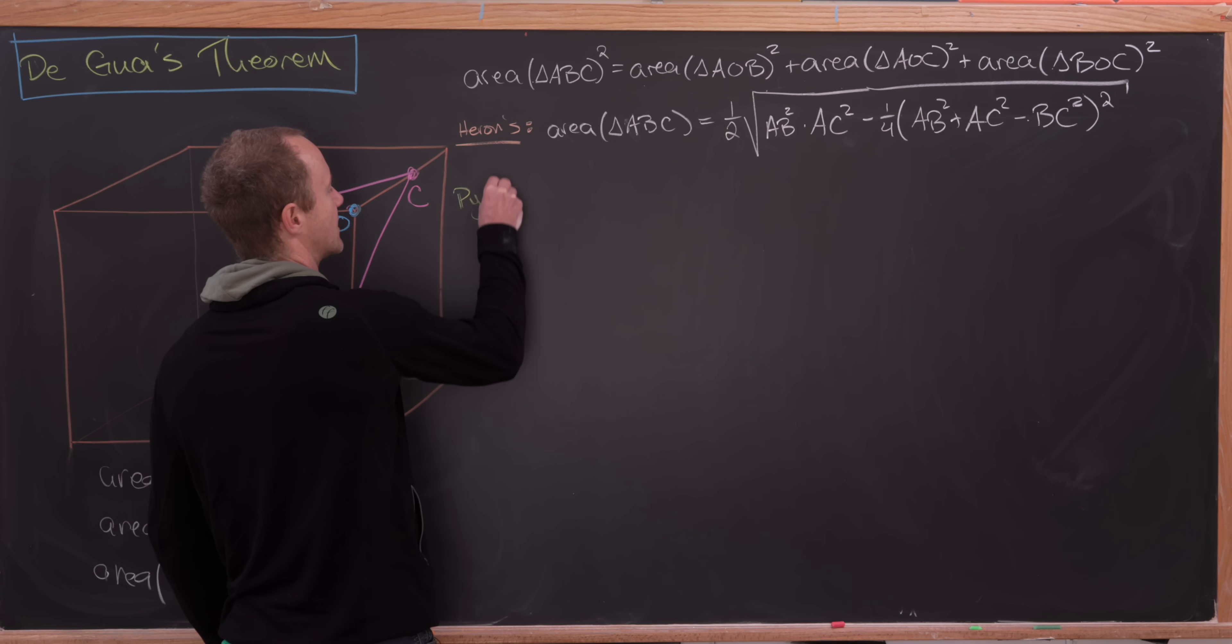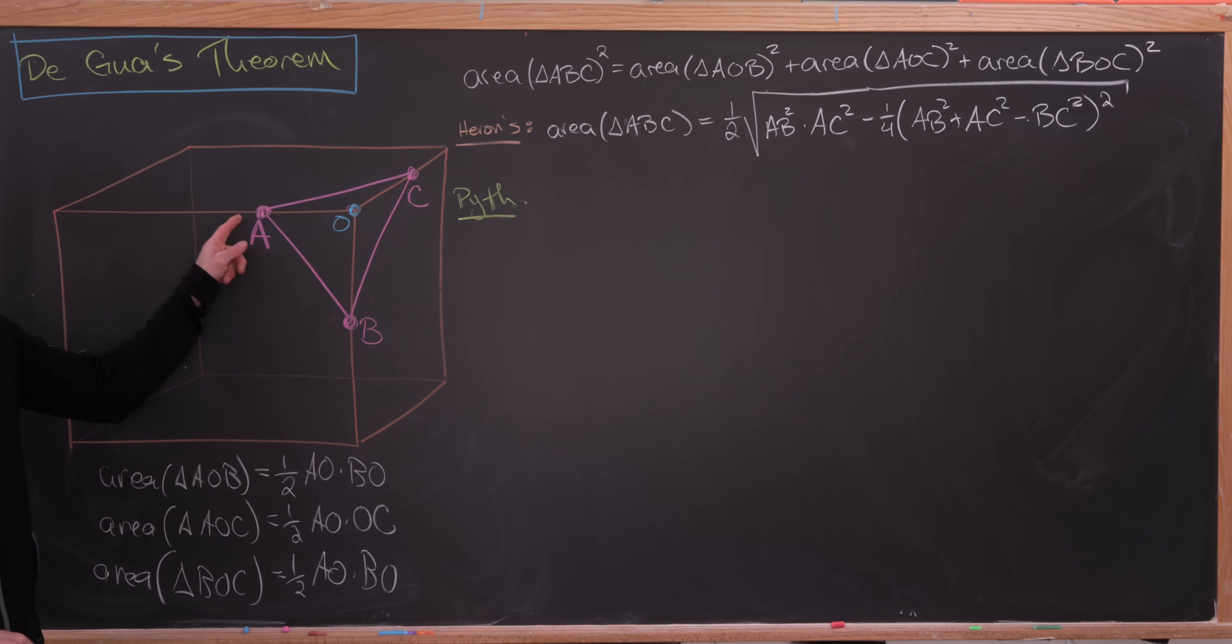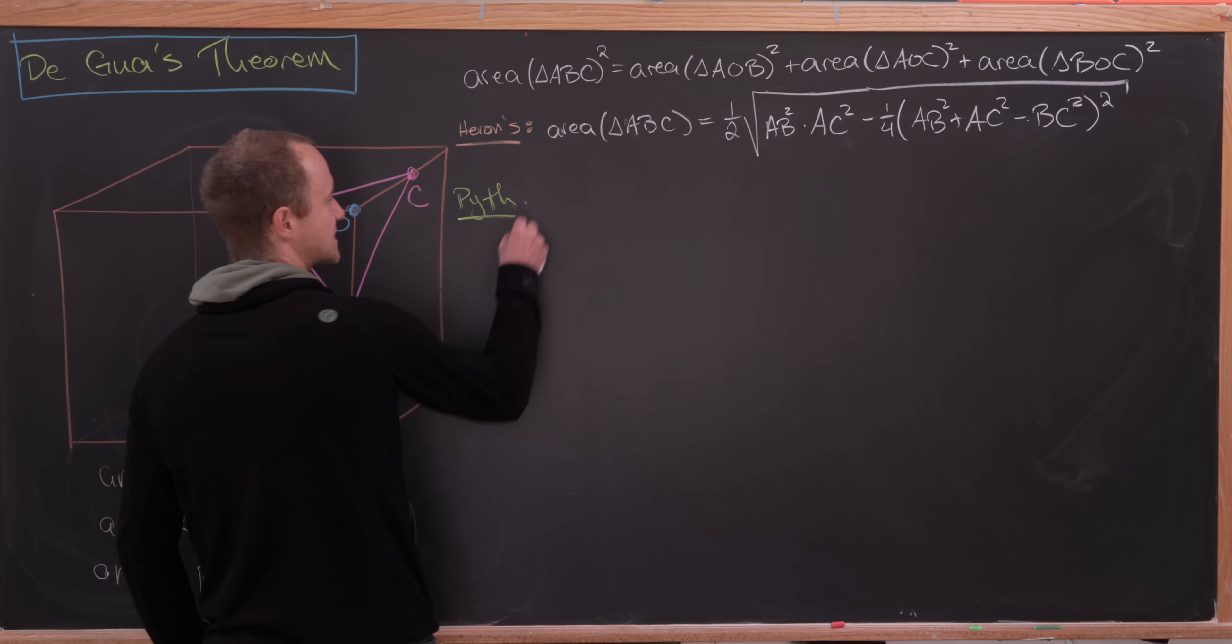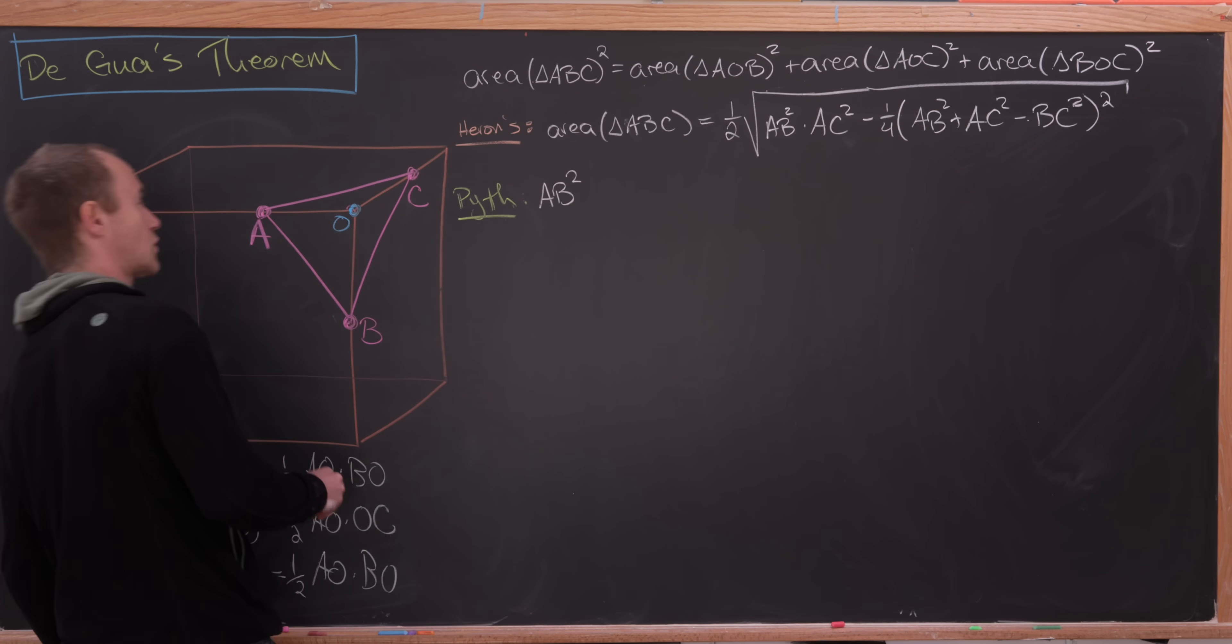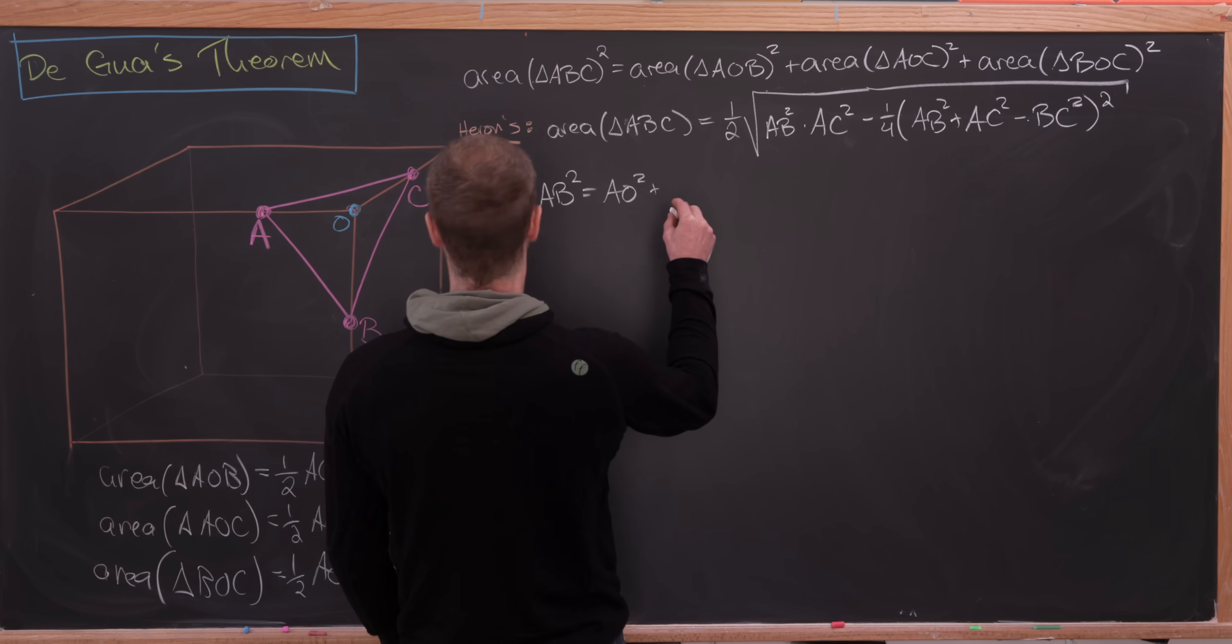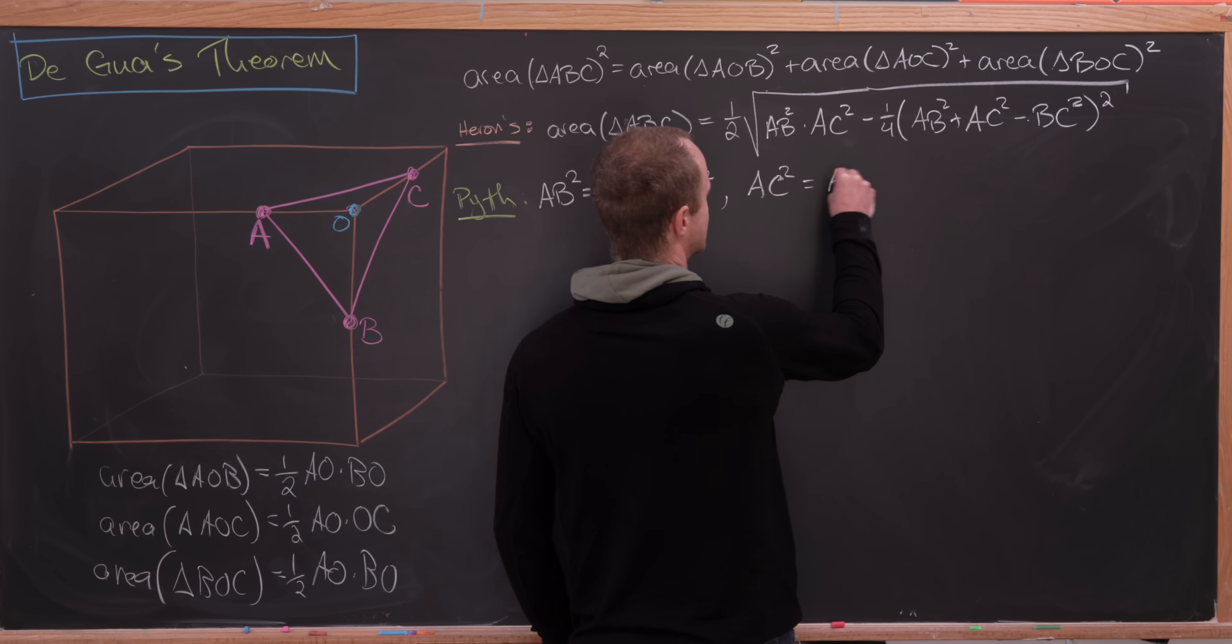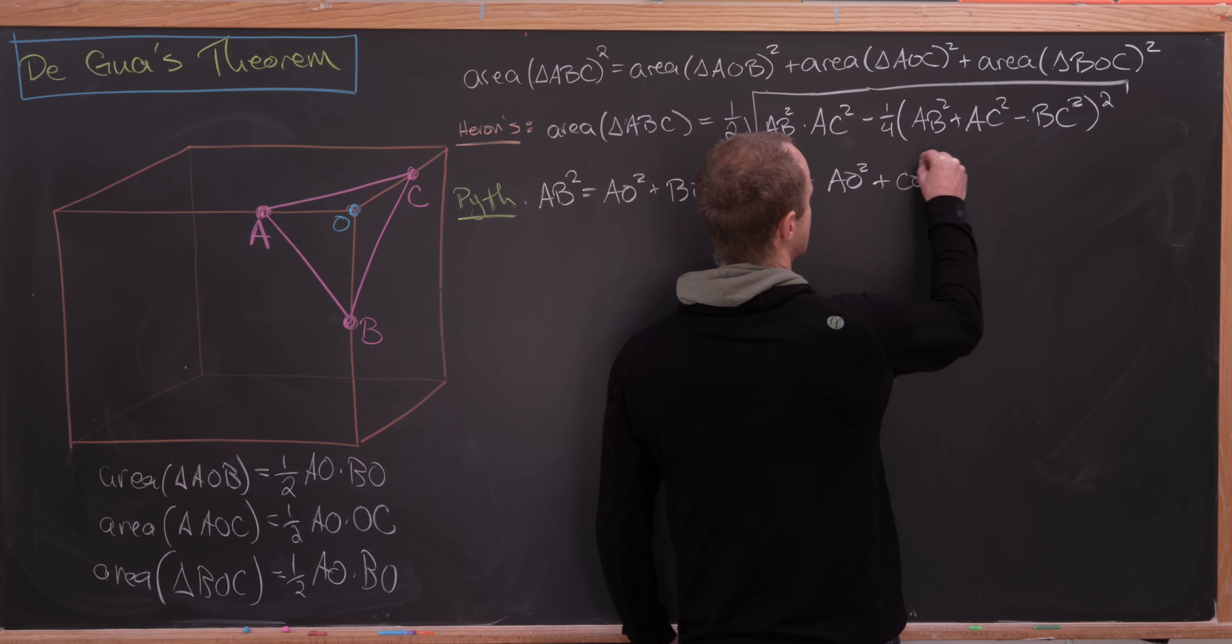let's note that by the Pythagorean theorem, we know the length of AB in terms of AO and BO, the length of AC in terms of AO and OC, and the length of BC in terms of BO and OC. That's because those are all right triangles. So the Pythagorean theorem will give us the following. So we have AB squared is equal to AO squared plus BO squared. We have AC squared is equal to AO squared plus CO squared.